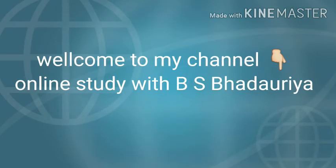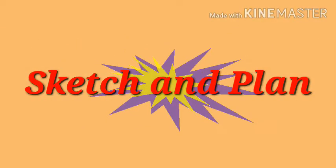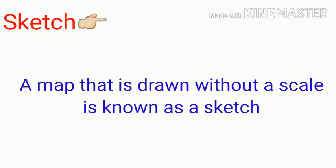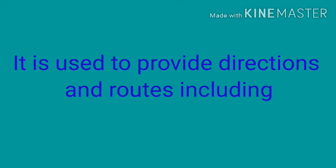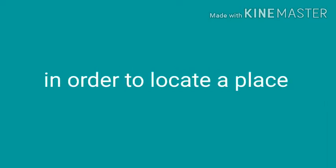Hello students, welcome back. In this video we are going to discuss the difference between sketch and plan. First, we will discuss about the sketch. A map that is drawn without a scale is known as a sketch. It is a rough drawing based on memory and spot observation. It is used to provide directions and routes including landmarks and names of streets in order to locate a place easily.